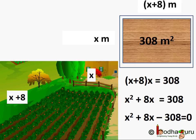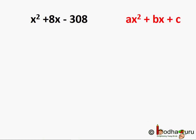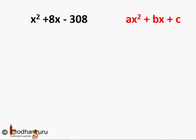So the zeros of the polynomial are the roots of the equation. We know how to find zeros of a quadratic polynomial through factorization. The easiest way is the splitting the middle term method.